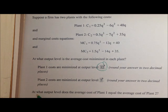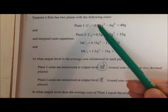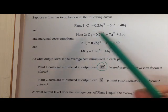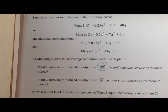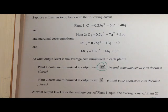And then the last question asks, at what output level does the average cost of plant 1 equal the average cost of plant 2? Well, if you've already done these two steps, then you already know the equation for average total cost at plant 1. We already found that here. You could find average total cost at plant 2 in the same way. And this question is just asking us to set those two things equal and solve for Q. So if you were to do that, you would end up with this answer here of 6.9.